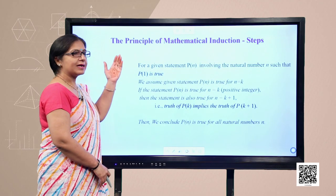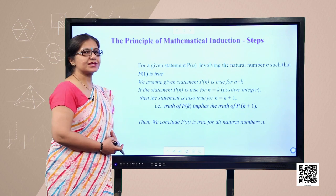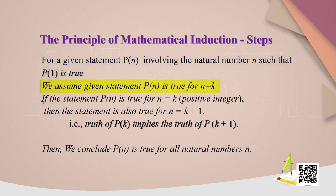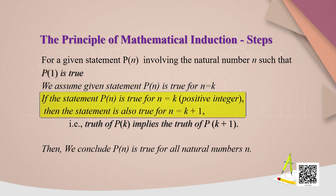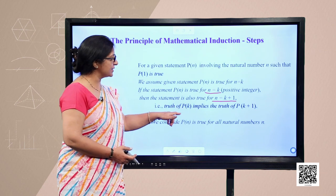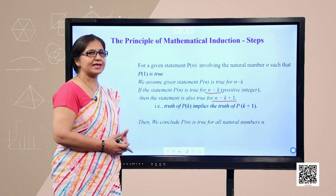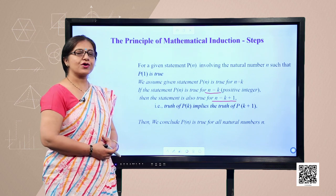Before that, we will recall the principle of mathematical induction steps. For a given statement P(n) involving natural number n such that P(1) is true — this is the basic step. Then we assume the given statement P(n) is true for n = k. If P(n) is true for n = k, where k is some positive integer, then the statement is also true for n = k+1. Once the truth of P(k) implies the truth of P(k+1), we can conclude that P(n) is true for all natural numbers.